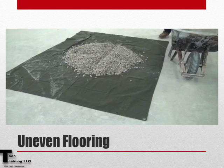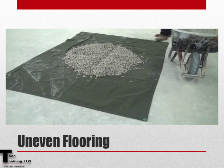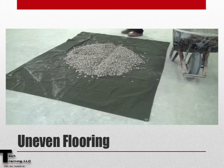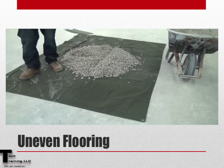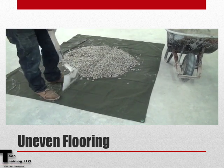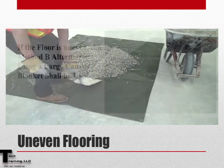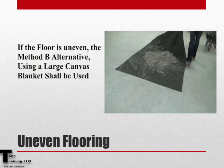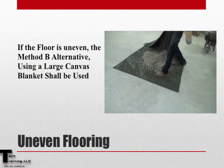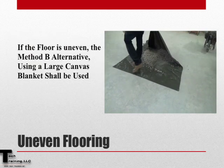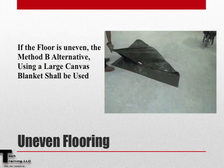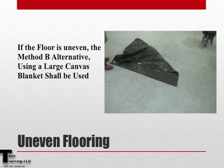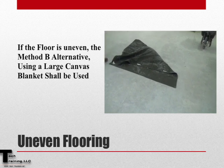If the floor is uneven, there is an alternative method for quartering using a canvas blanket. This alternative procedure can be found in AASHTO T248, section 10.1.2.